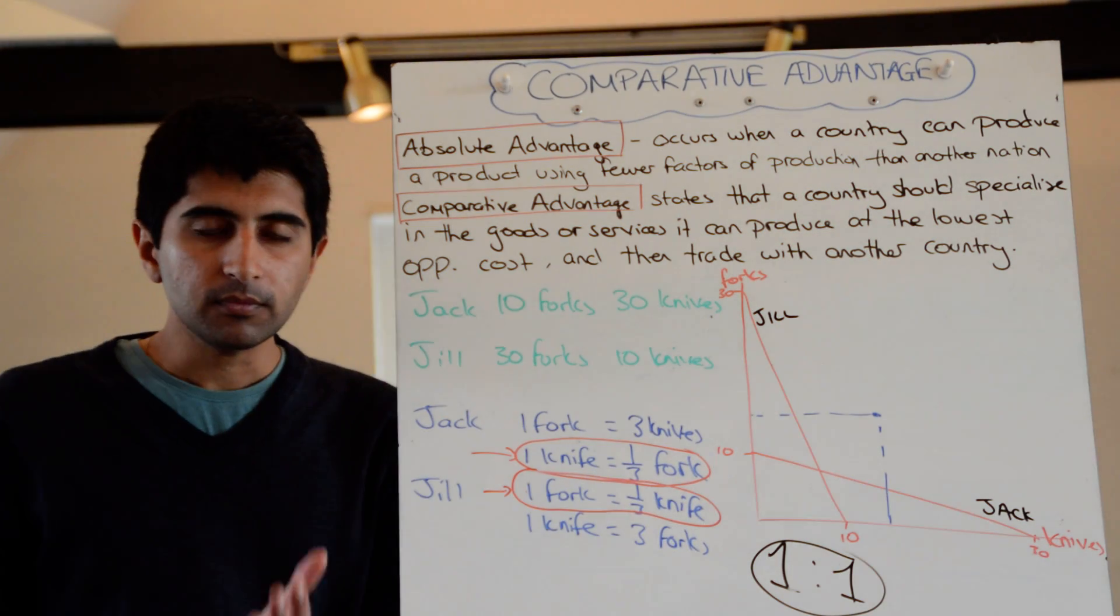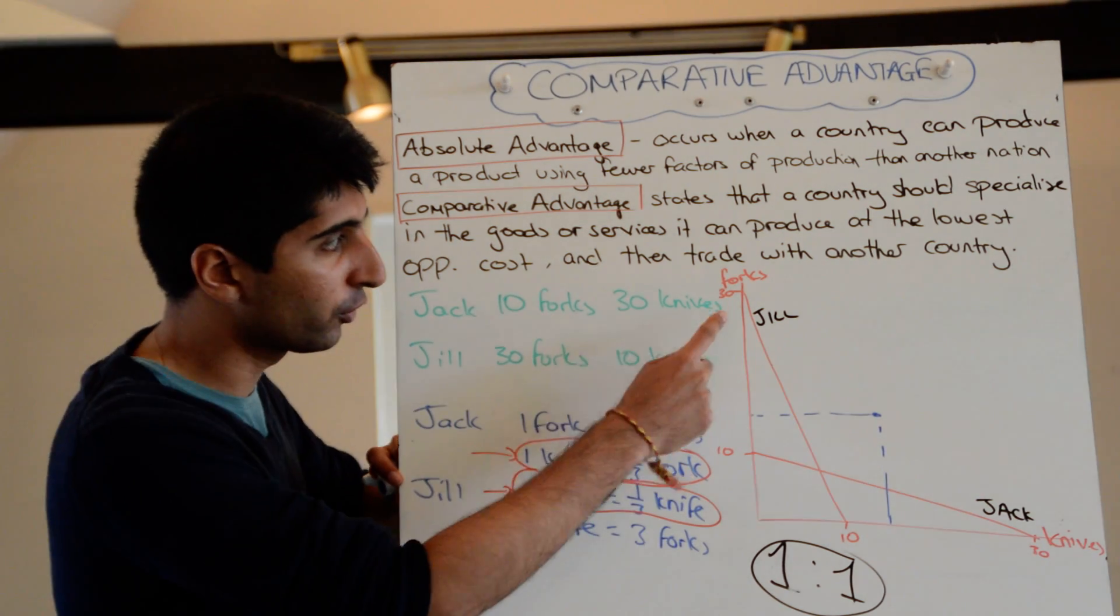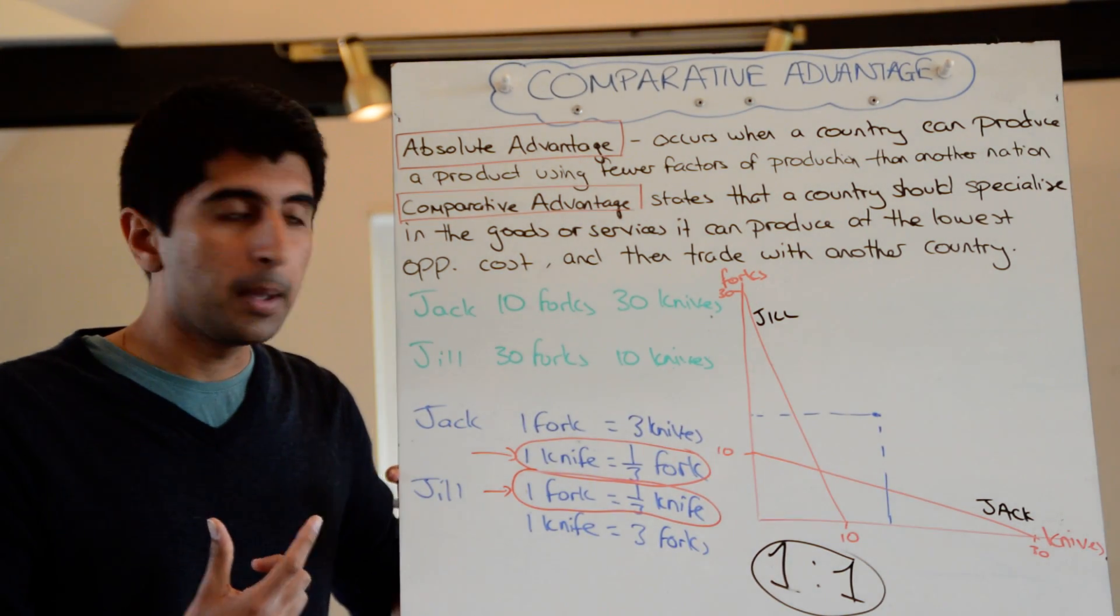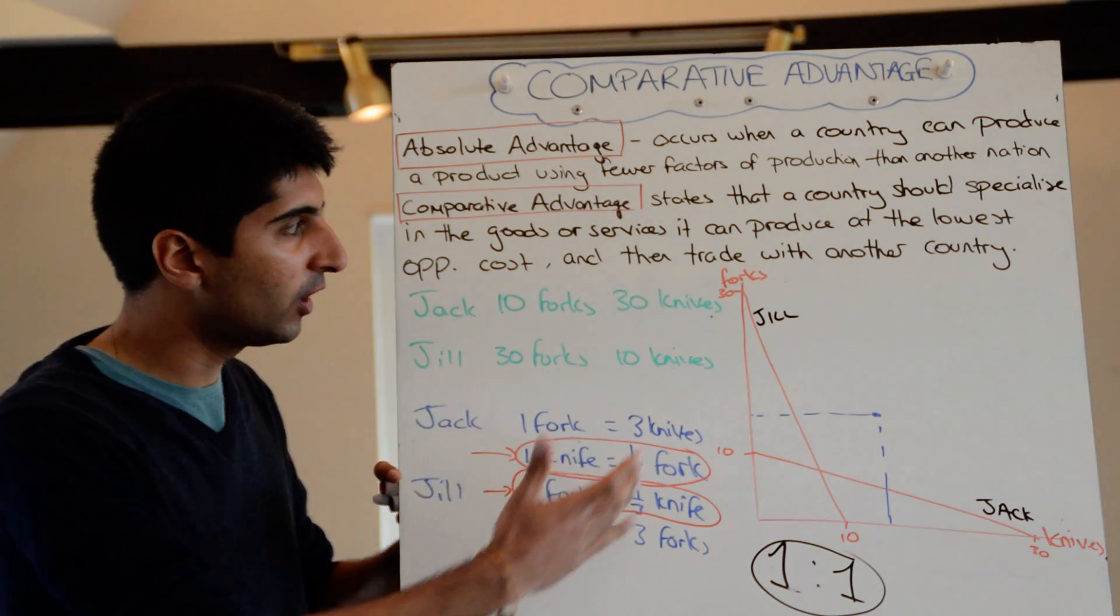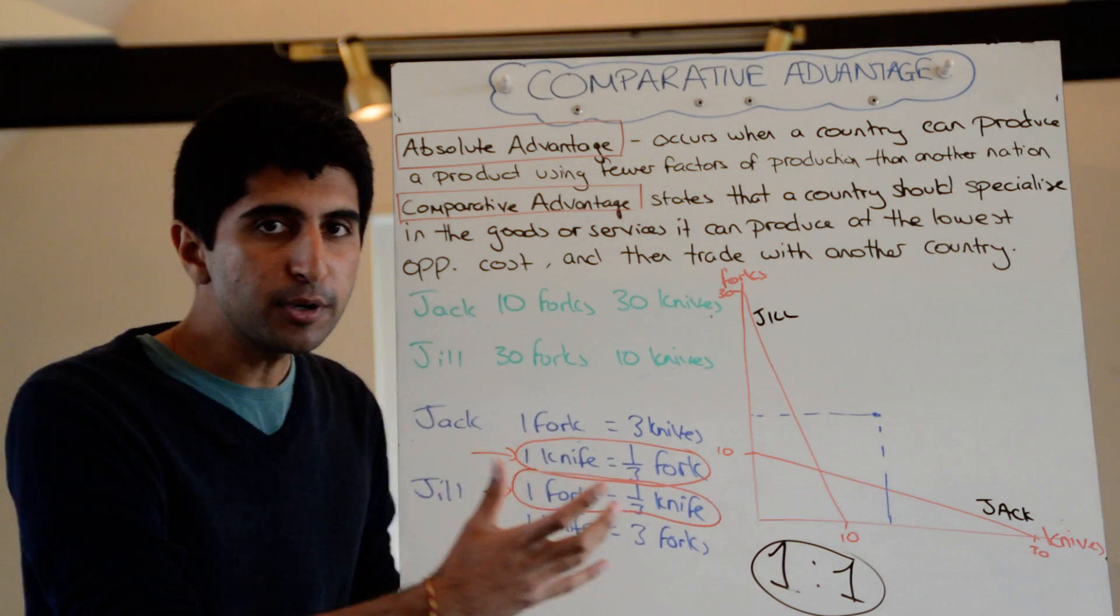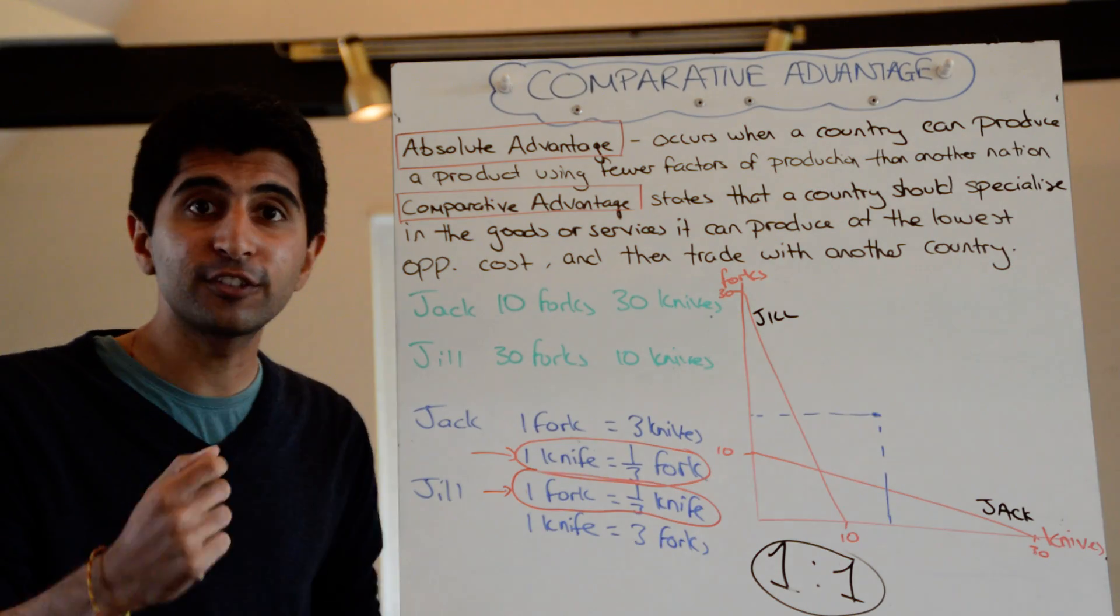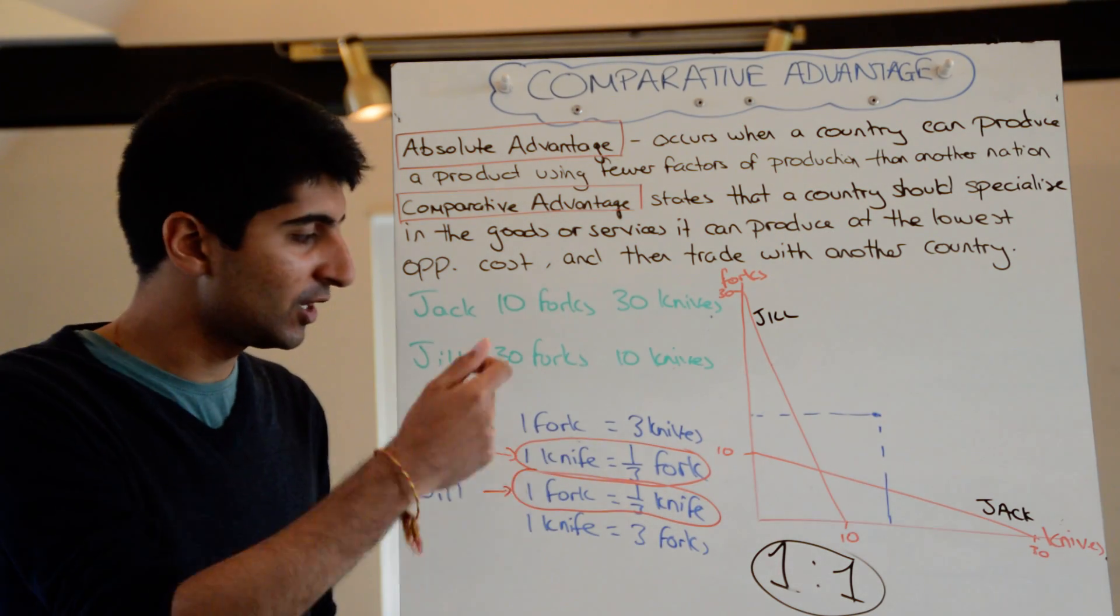Jill, she could produce, because Jill's got the comparative advantage in forks, so she could produce thirty forks. But if she just produced thirty forks, she wouldn't actually be able to get any knives. Instead, if she produced fifteen forks and sacrificed fifteen forks, maybe sold those fifteen forks to Jack, she would get fifteen knives back in return.